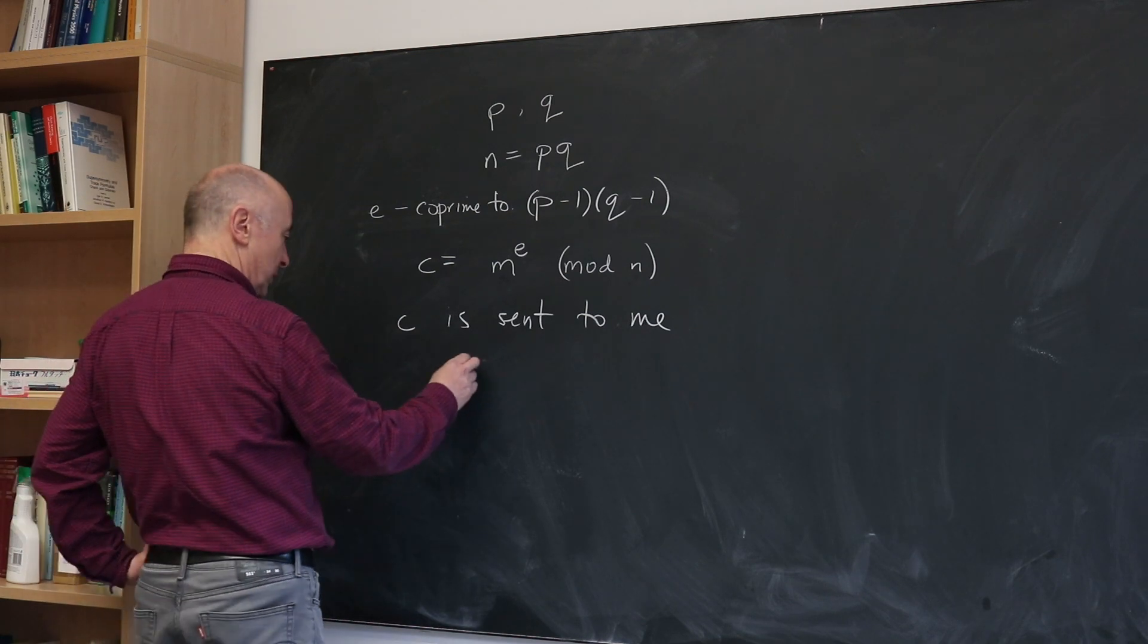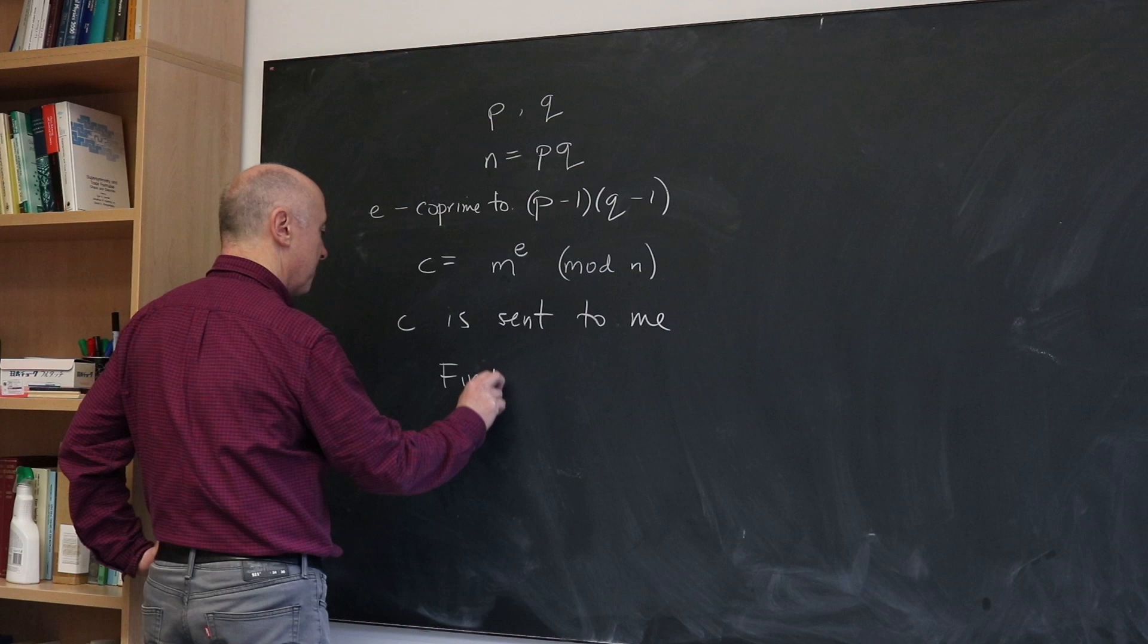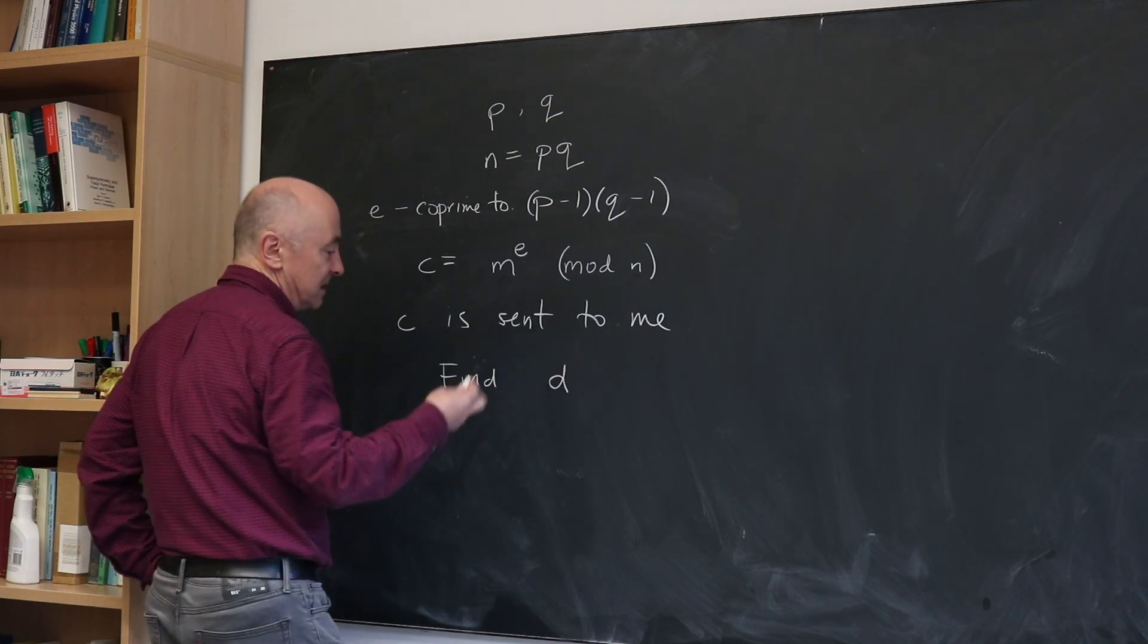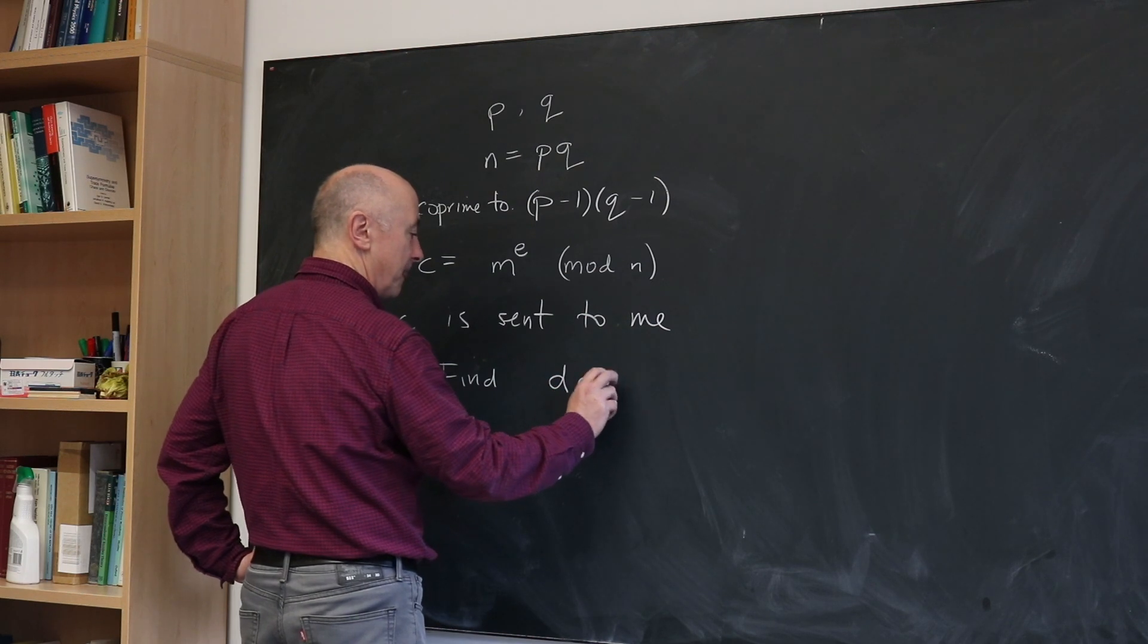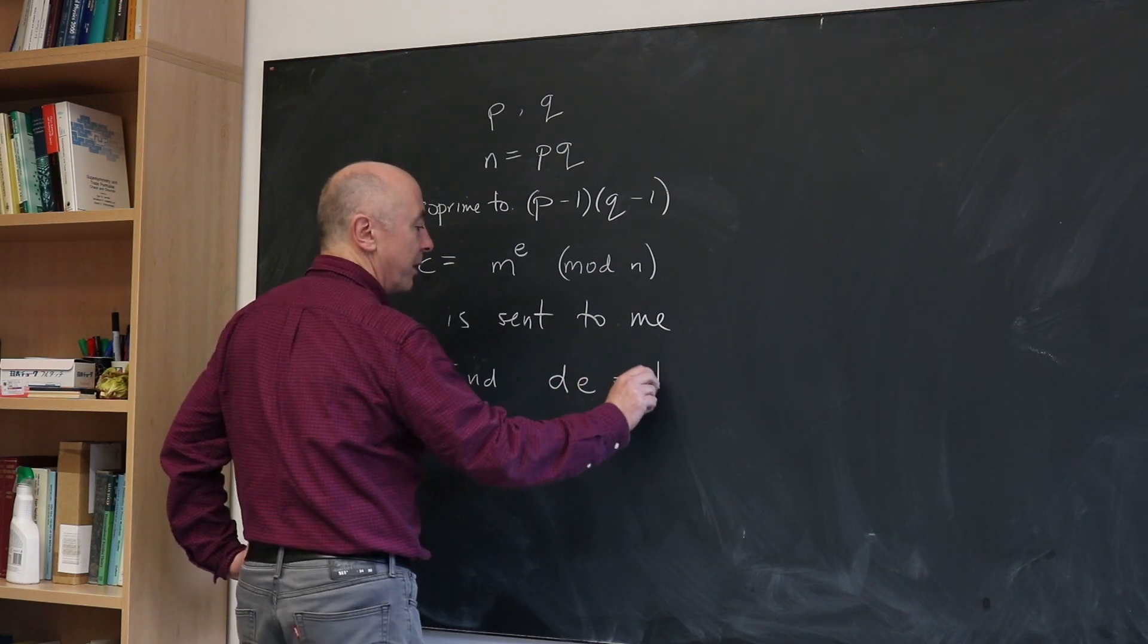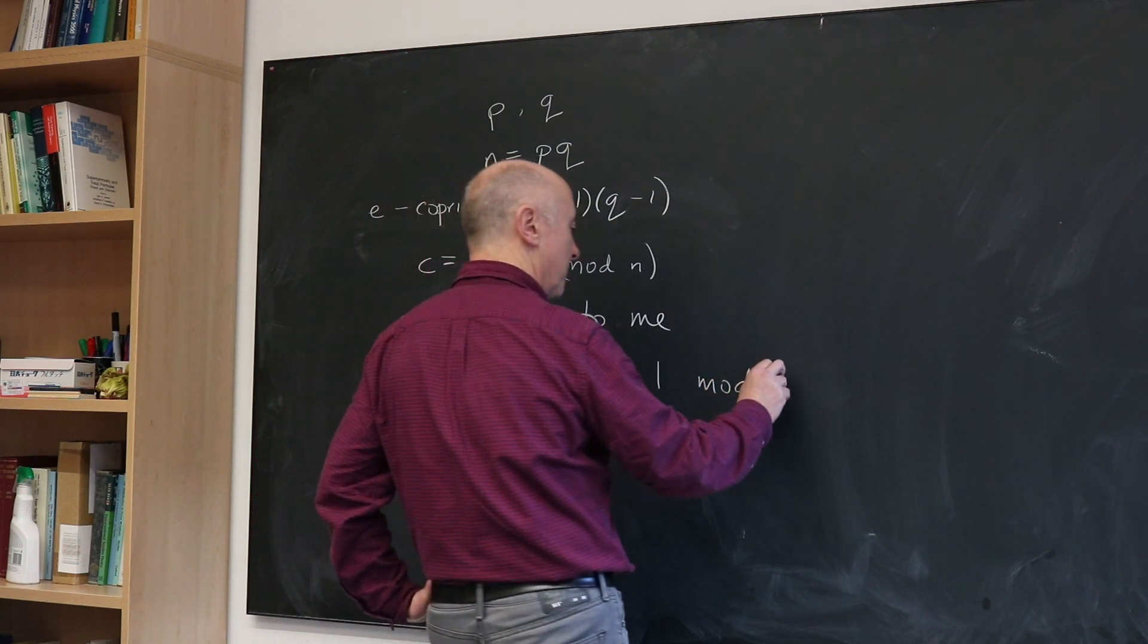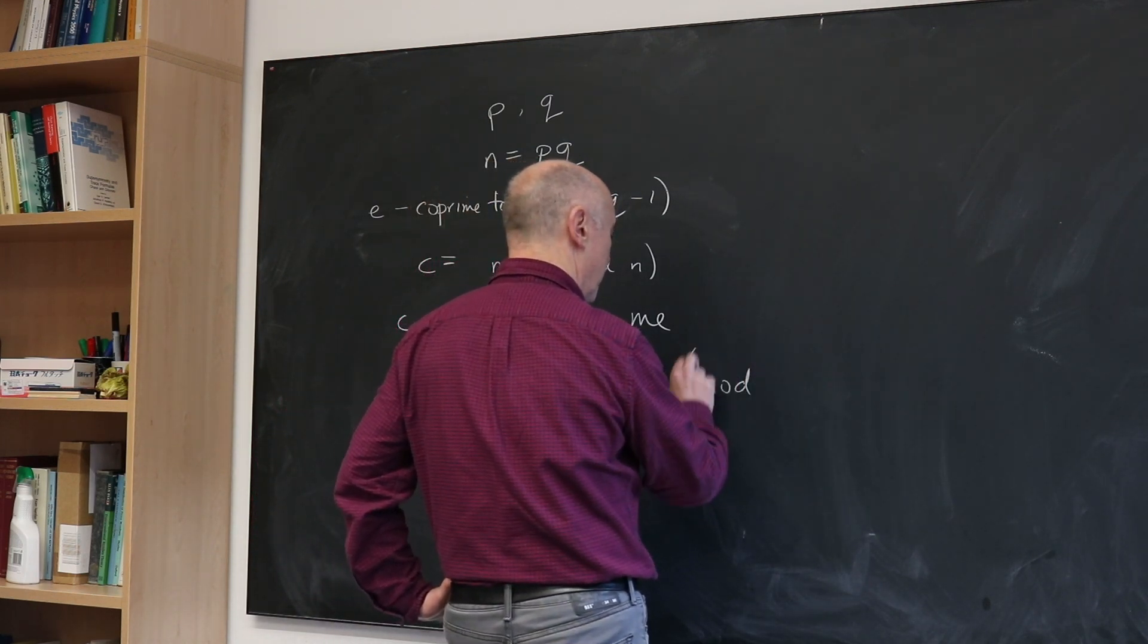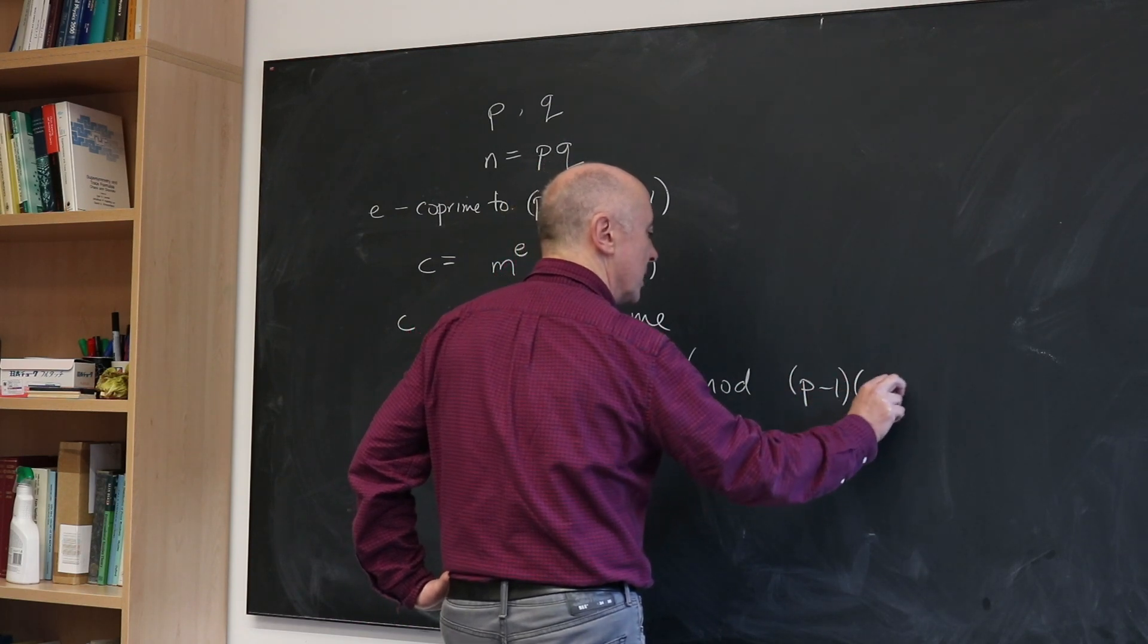How do I from the number C get the number M out? Well, I do the following. First of all, I find a number D.